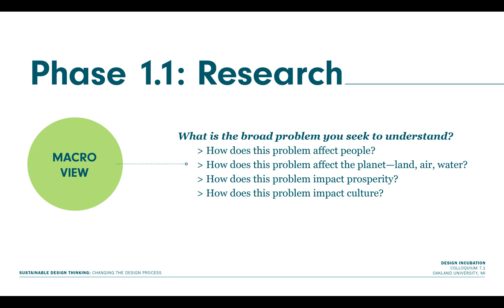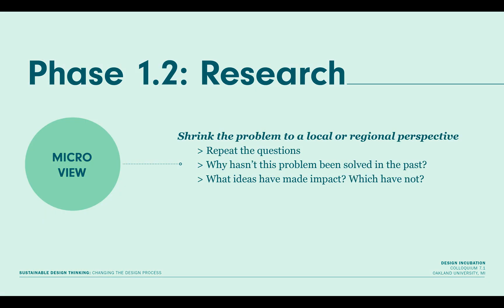Phase one would allow for the complex problem to be understood from a macro view. The questions to be asked would include: how does this problem impact people, the planet, land, air, water, and natural resources, in addition to economic and cultural considerations? Shrinking the problem to a micro view — one that fits within the lens of a local or regional perspective — comes next, asking how does this problem impact my community and my world, why is this problem so hard to solve, and what has and what has not worked in the past?